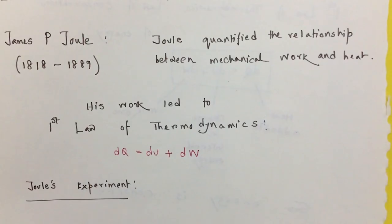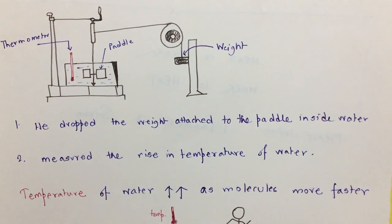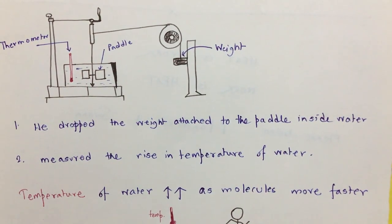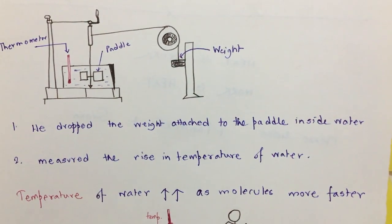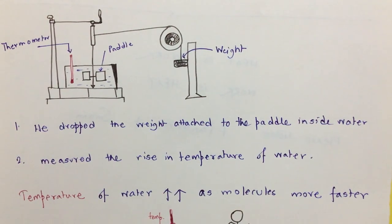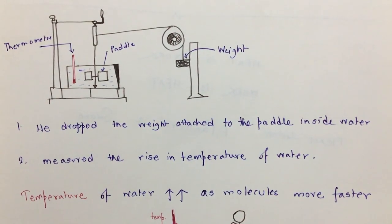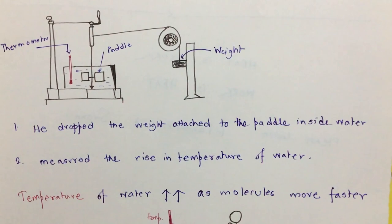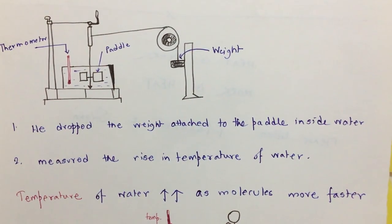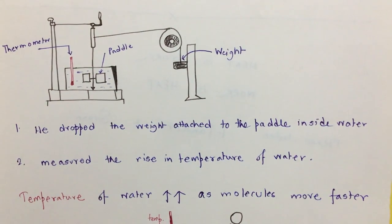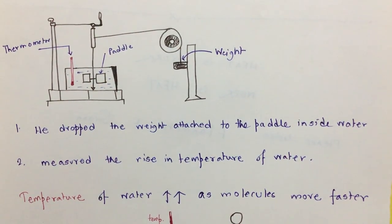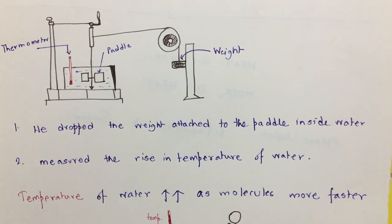Joule did an experiment. Just briefly citing the experiment: there is a water filled tank and there is a paddle. If you paddle inside the water, the water molecules will be energized because of the motion inside water. And he puts some weight. And this weight is connected to the paddle. And as the weight drops off, temperature increases.